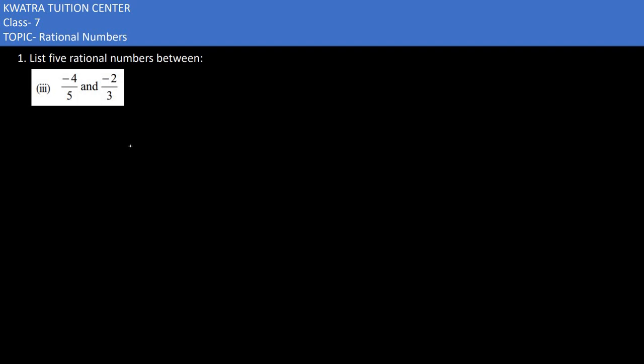We have the first question third part of it and it says we have minus four by five and minus two by three. Now we need to find the five rational numbers in between these two quantities.